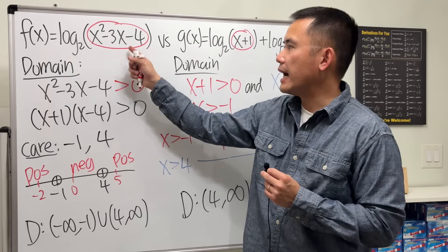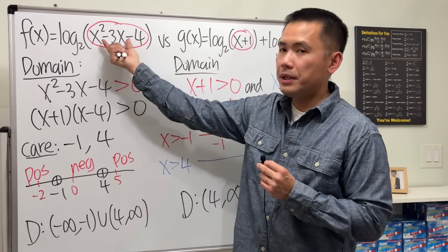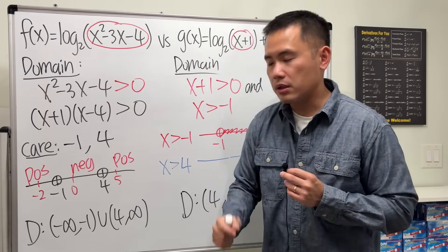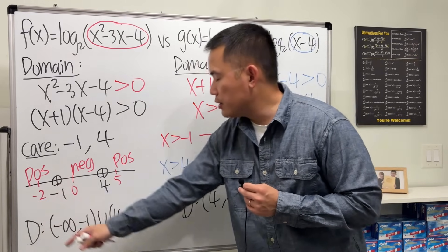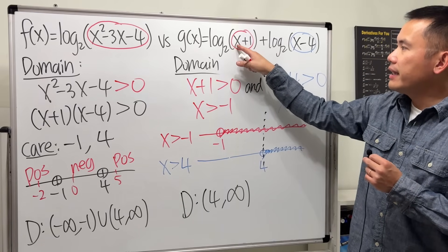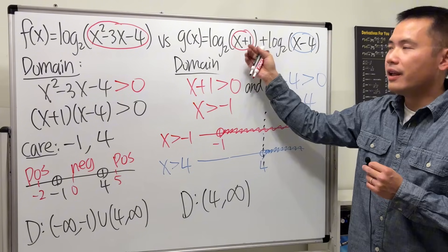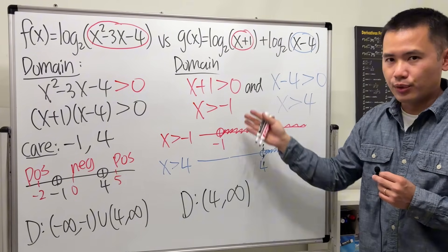For this one, for example, you could plug in negative 2 into the inside. If you work that out, that will be a positive number, so it still work. But if you plug in negative 2 into here, negative 2 plus 1 is negative 1, that will ruin this part, so that's no good.